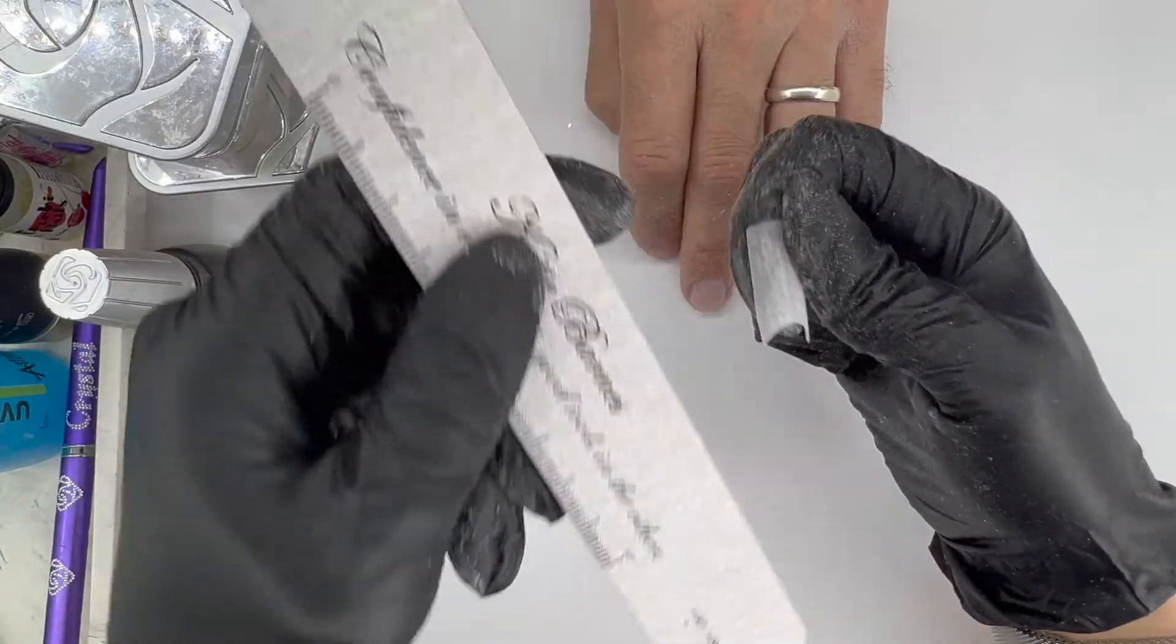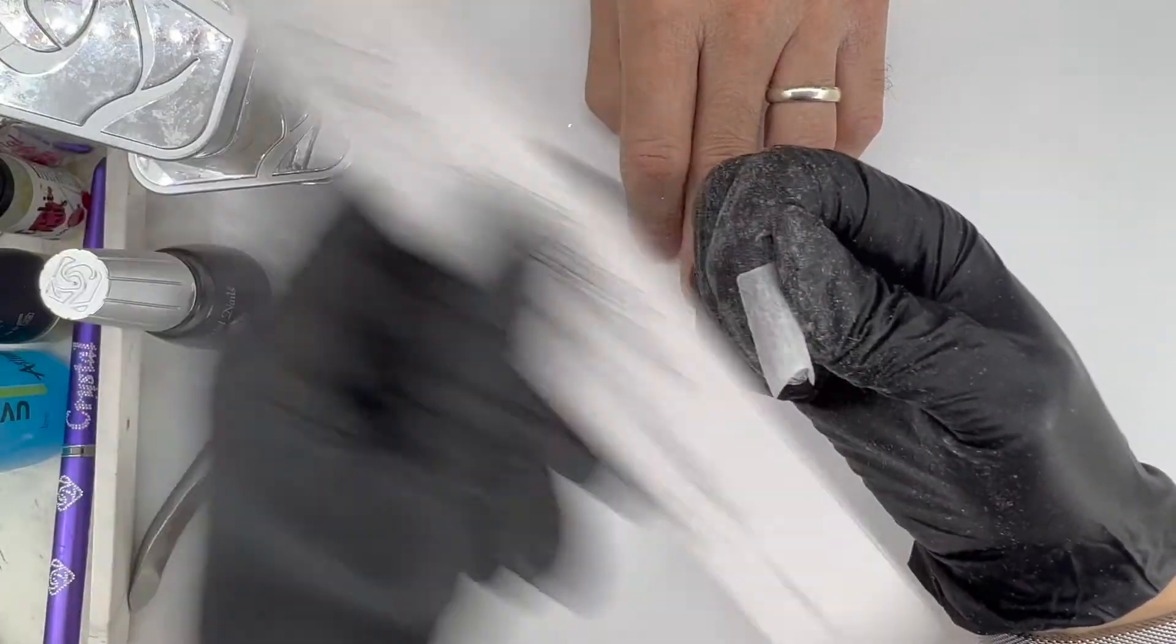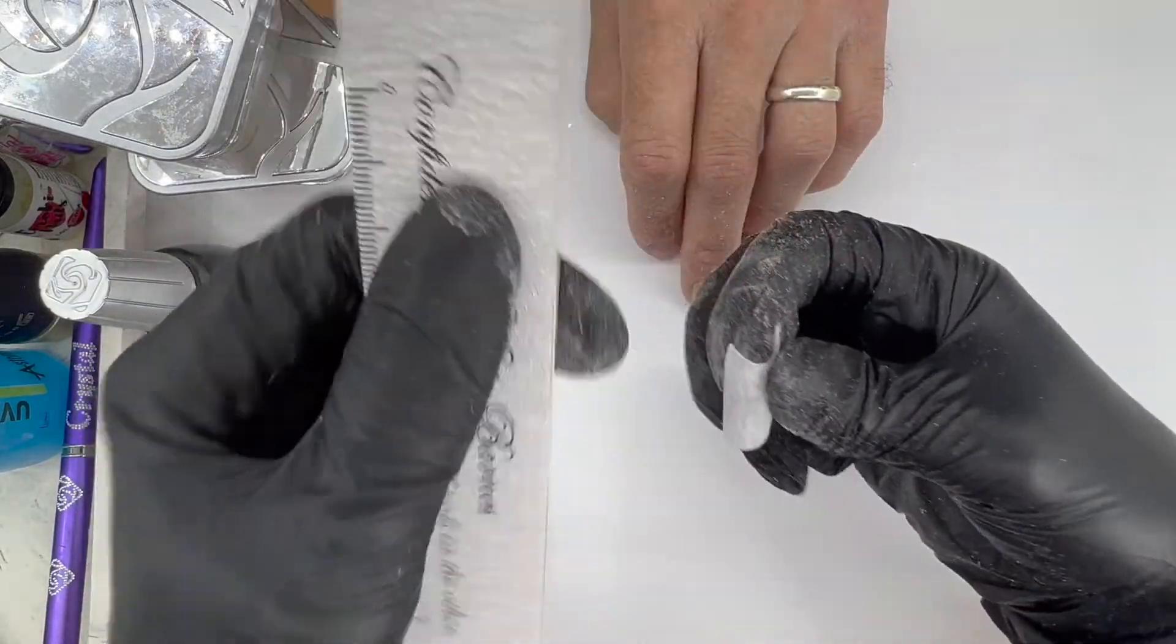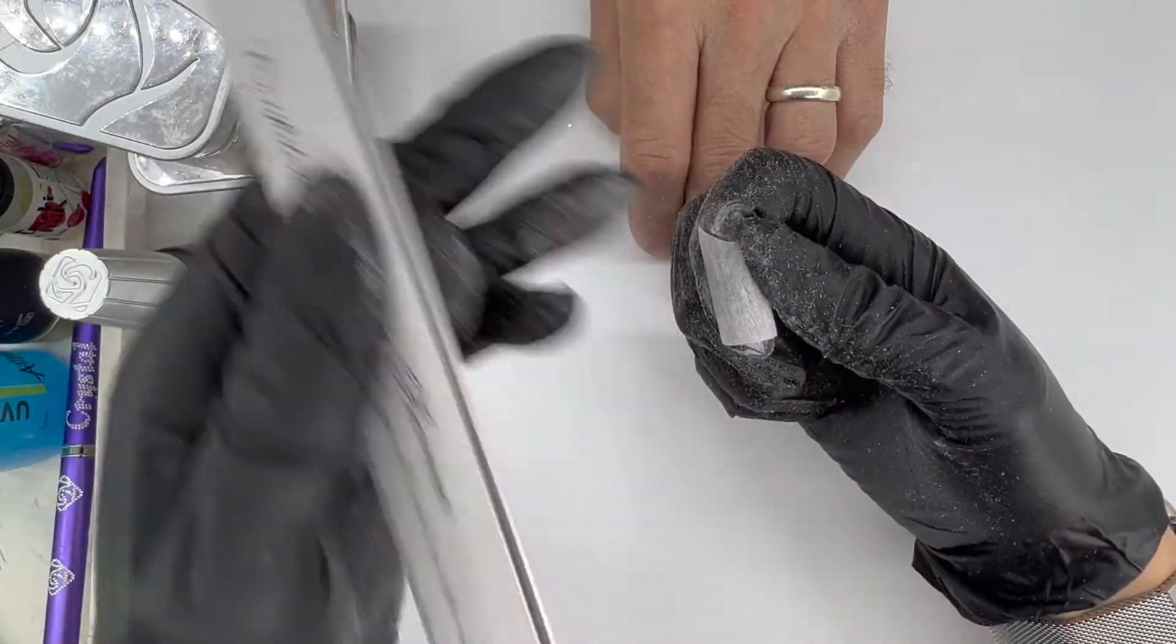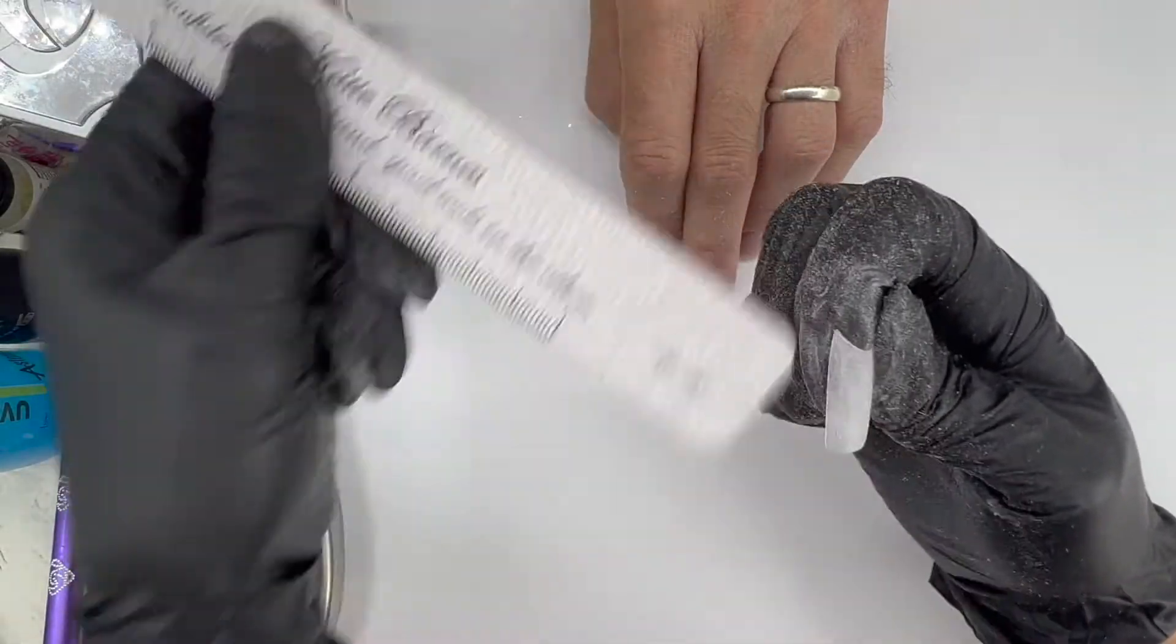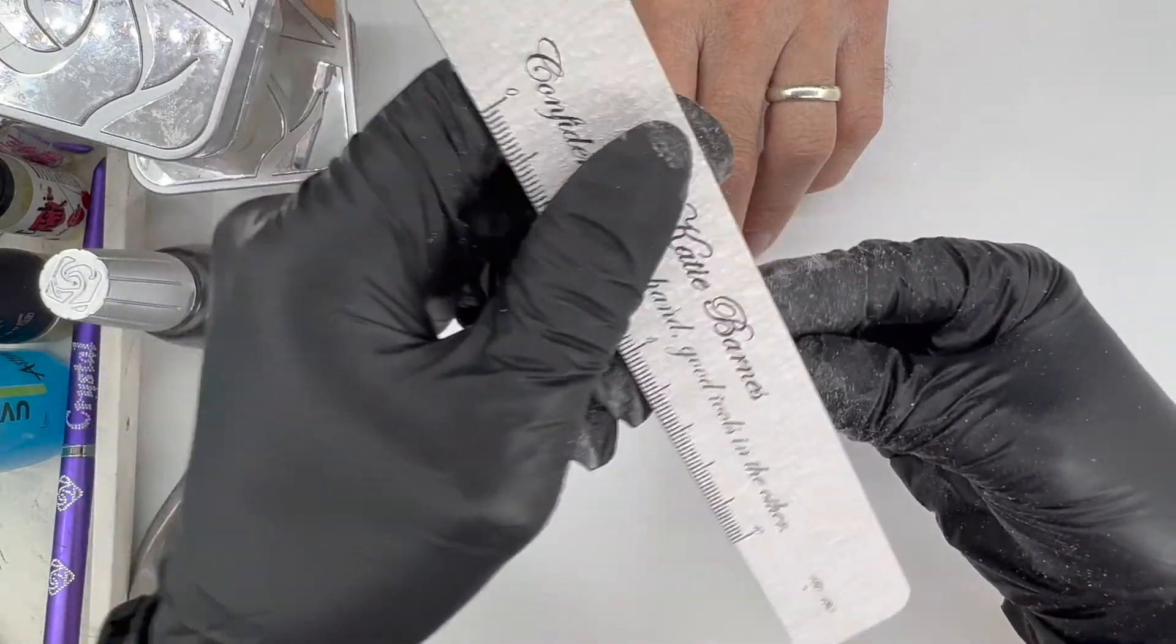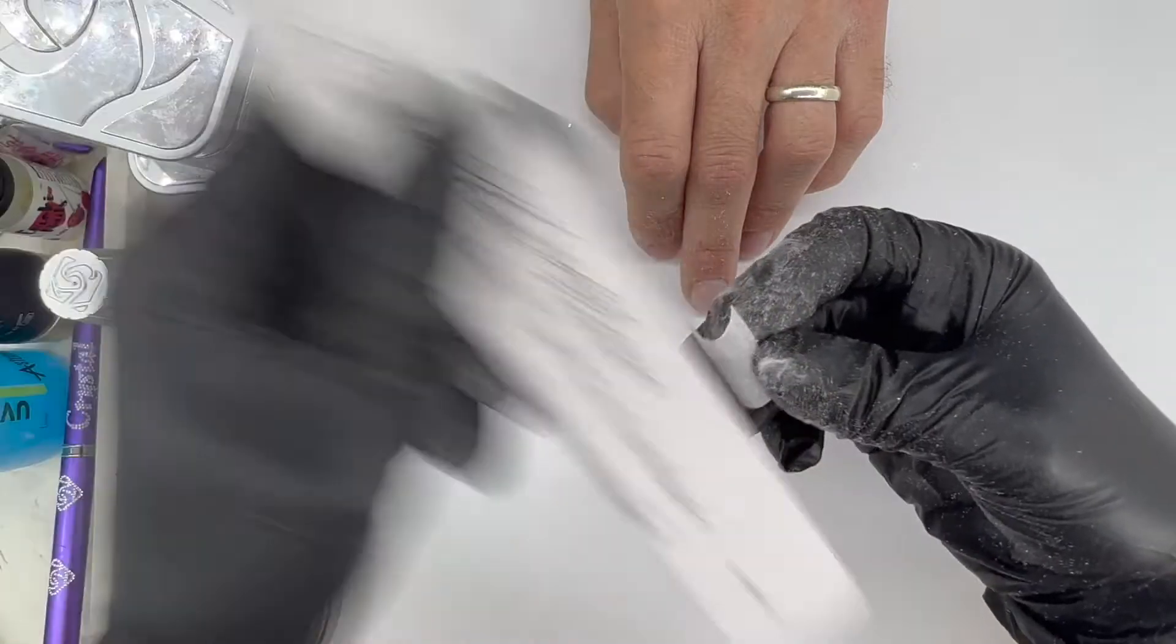We want this area to be super thin because when we glue this to the nail, we don't want a ledge at all. What we don't want to do is waste time then blending that tip in. Don't worry if you file into that as well because you're going to be covering it.